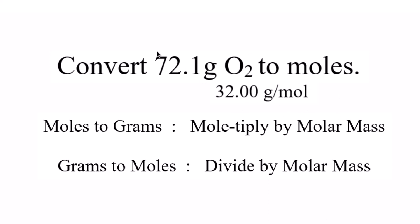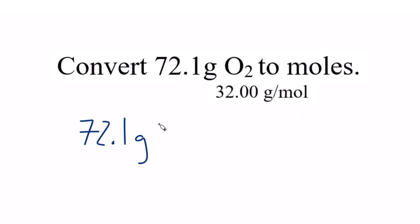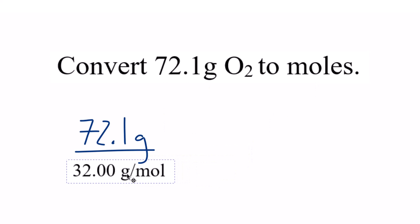So to get from grams of O2 to moles, we take our grams, divide by the molar mass, and we get moles. We have our 72.1 grams that was given to us. We divide that by the molar mass of O2. When we do this, you'll see we have grams on the top and the bottom. They cancel out.